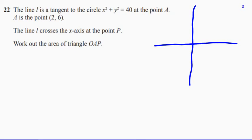So x squared plus y squared equals 40 is a circle, so we should know that. There we go. And then we're told about A. A is 0.26, so that's about there.